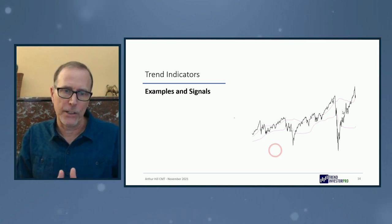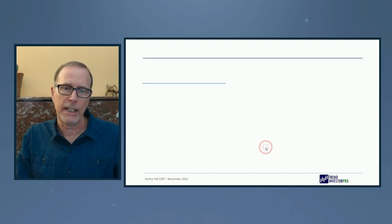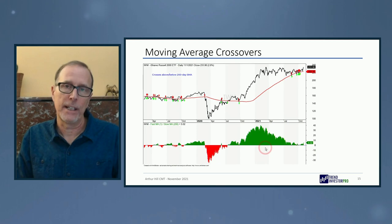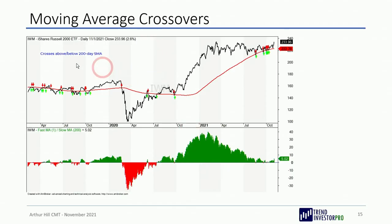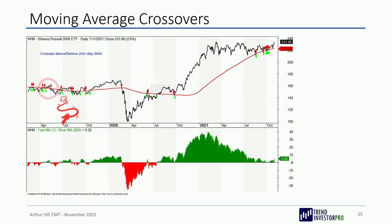Now let's go over the indicators with real examples. First, moving average crossovers — the classic. This is IWM, the Russell 2000 ETF, with the 200-day moving average in red. Red arrows show when price crosses below and green arrows show when it crosses above. There's the signal right before the COVID crash. But we get a lot of whipsaws as you can see. The oscillator below shows green when the close is above the 200-day and red when it's below, illustrating those whipsaws clearly.